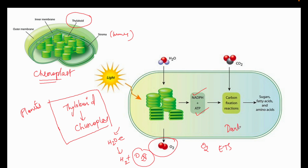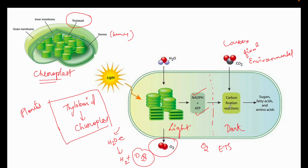These are the dark reactions and these are the light-dependent reactions. In the dark reactions, we utilize the NADPH reducing power and ATP to fix environmental carbon dioxide - this is carbon fixation. The CO2 is fixed into sugars, fatty acids, and amino acids required for the plants. These metabolic pathways are all interconnected. So this is the overall photosynthetic scheme and carbon cycle of plants.